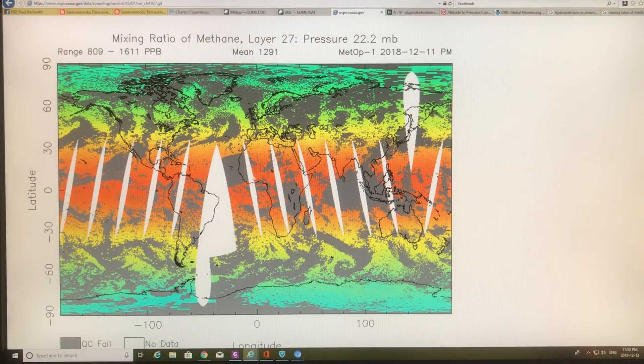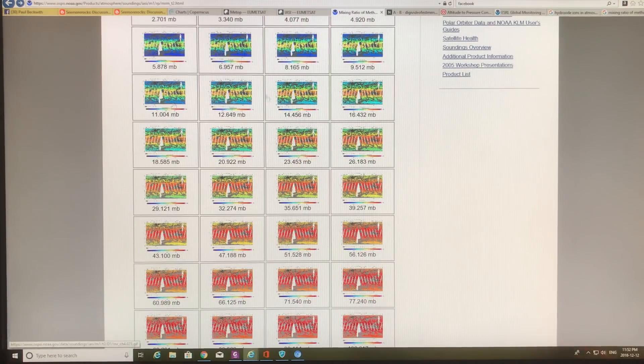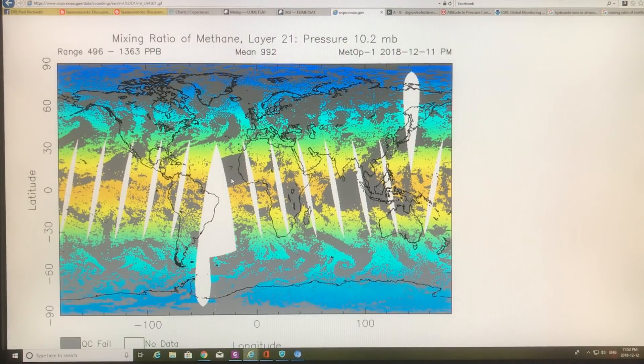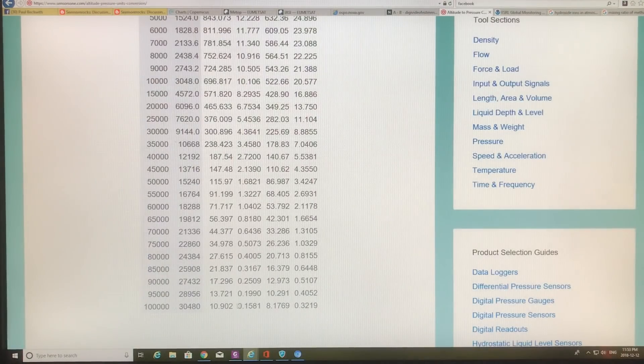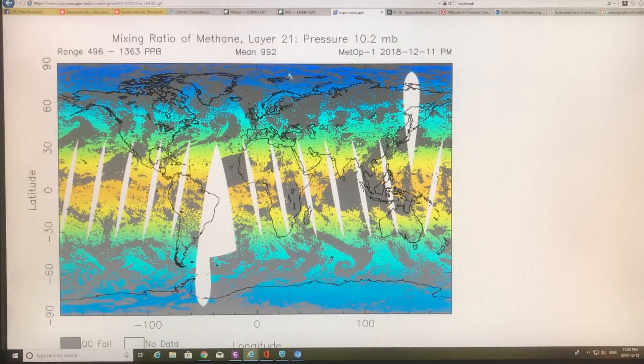We said about 10 millibar was 100,000 feet, 30 kilometers. So at this altitude, you can see that the higher levels of methane are channeled around the equator. The mean is 992 up to 1363. So the numbers here are probably about 1300 ppb of methane at that altitude, those high altitudes.